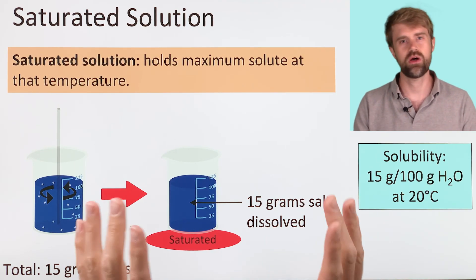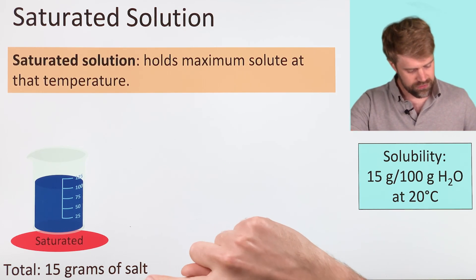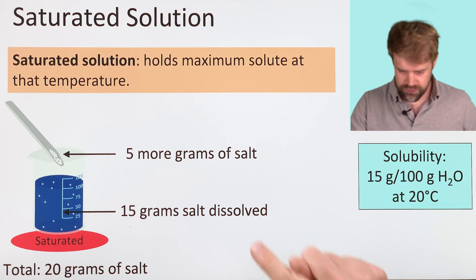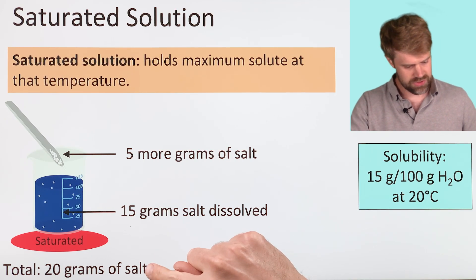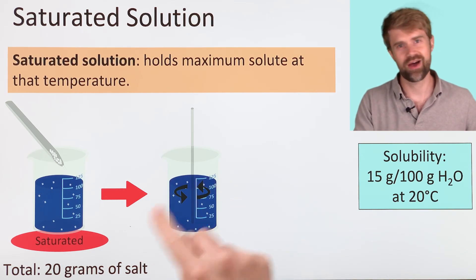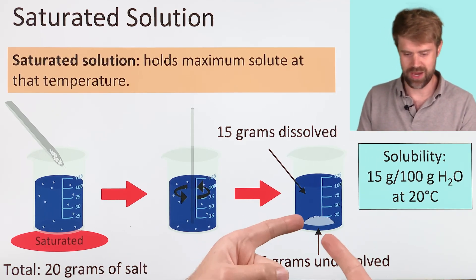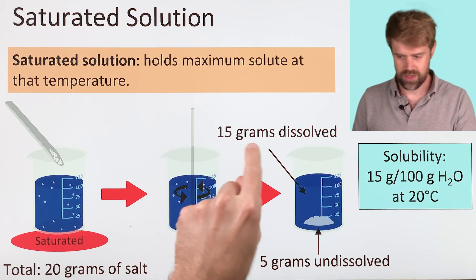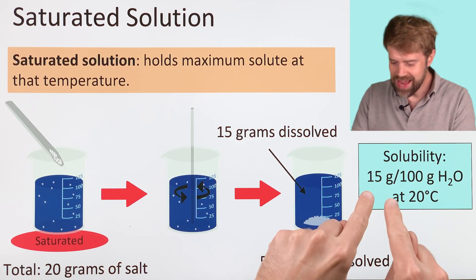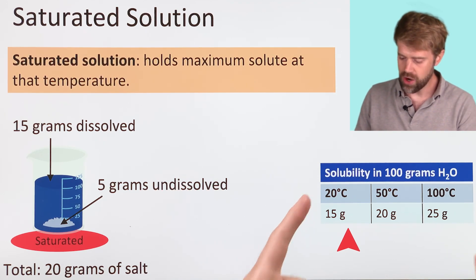Because our solution is saturated, we can't dissolve any more salt. Let's add another 5 grams of salt to see what happens. There's already 15 grams dissolved, so now we have 20 grams in the beaker. No matter how hard you stir, the extra salt is just going to swirl around and not dissolve. Once you're done stirring, the extra salt settles to the bottom. There are 15 grams dissolved and 5 grams undissolved settled on the bottom, because the solution can't hold any more than 15 grams of salt.